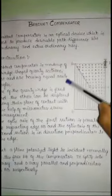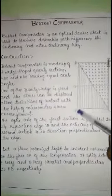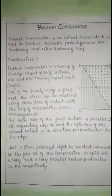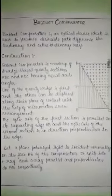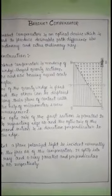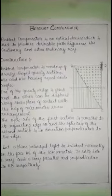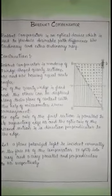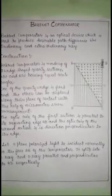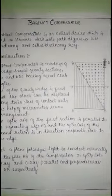Let a plane polarized light be incident normally on the refracting edge AB of the compensator. It splits into two rays — the extraordinary ray and ordinary ray — which are parallel and perpendicular to the refracting edge AB respectively. Since the crystal is a quartz positive uniaxial crystal, the E-ray travels slower than the O-ray in the first section. When these rays enter the second section, the E-ray becomes O-ray, since the optic axis in the second section is in a direction normal to that in the first prism.